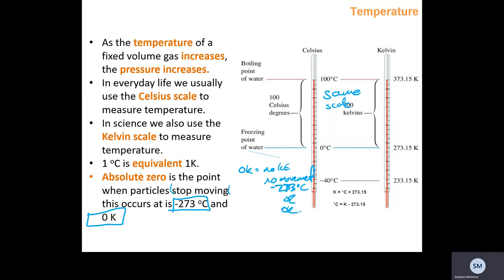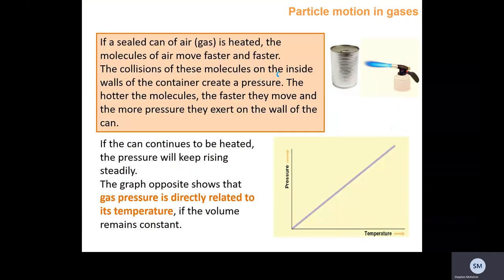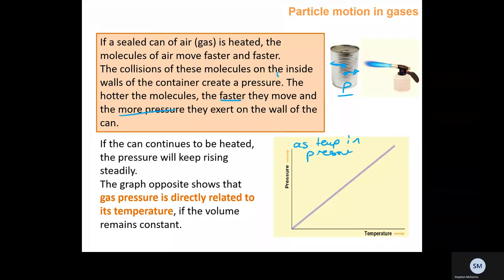If a sealed can of air or gas is heated, the molecules move faster and faster. The collisions of these molecules on the inside walls of the container create pressure. The hotter the molecules, the faster they move and the more pressure they exert. If the can continues to be heated, the pressure keeps rising steadily. The graph shows that gas pressure is directly proportional to temperature — a linear relationship — as temperature increases, pressure increases.